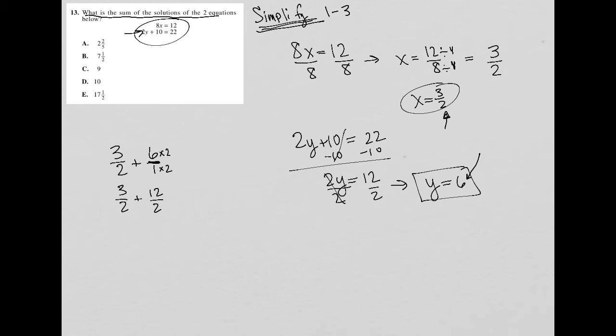Now that my denominators are the same, I can add the numerators together and keep the denominator the same because that's how we add fractions. So 3 plus 12 is 15, so this becomes 15 over 2.